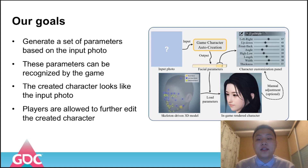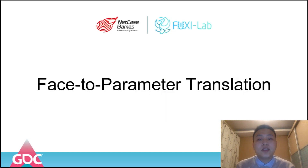Obviously, we need to achieve the following goals. Firstly, we need to generate a set of parameters based on the input photo, and then these parameters can be recognized by the game to create a corresponding character. Most importantly, this character should look like the input photo, and we also need to meet the requirement of further editing. Now let me explain how we design and implement the character auto-creation.